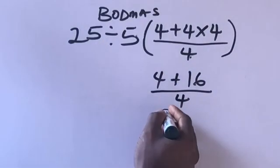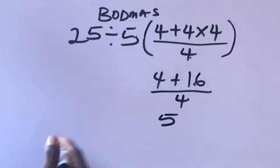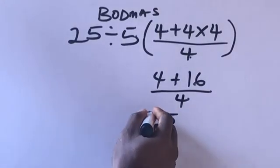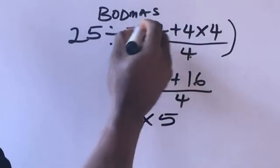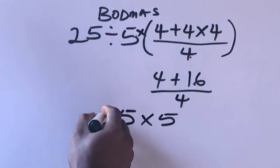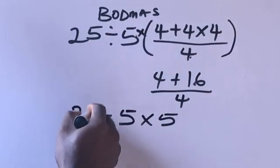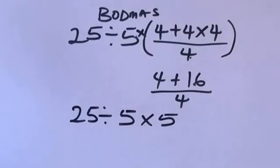Will give us what? 5. Times - remember there is an invisible multiplication here - 5 divide 25. So we have 25 divided by 5 times 5.